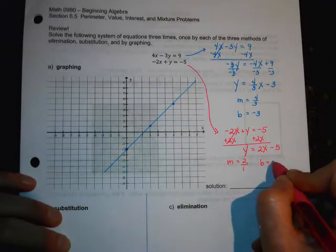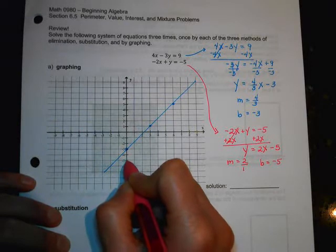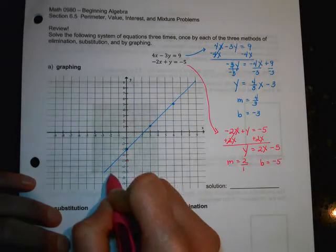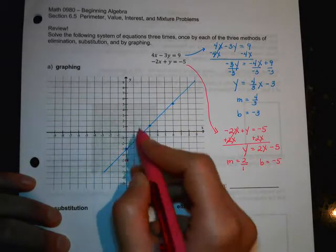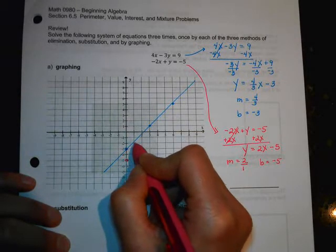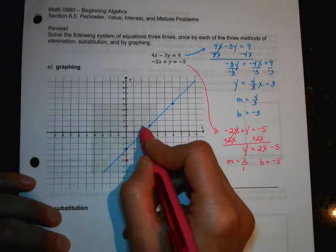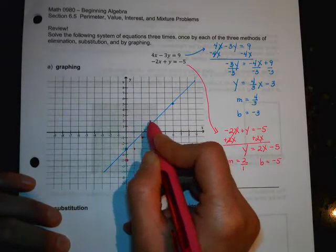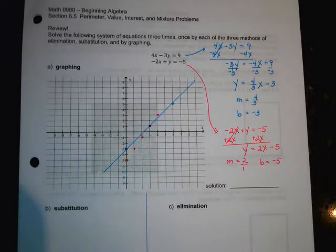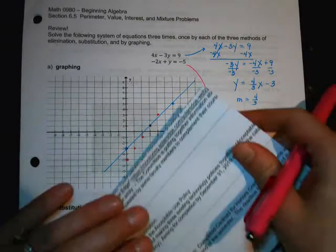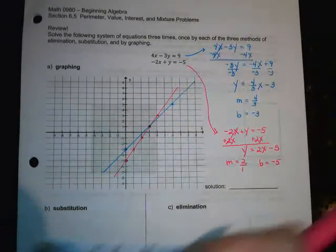So my slope is 2 over 1, and my starting value is negative 5. So let's start down here at negative 5. And I'm going to rise 2 and run 1. Rise 2 and run 1. Rise 2 and run 1. There it is. There's my solution. Rise 2, run 1. So you kind of see where they cross already, but we'll draw our line.